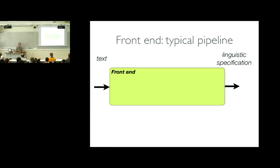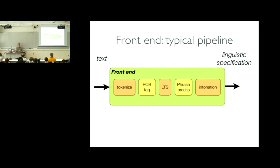Let's see in pictures the sorts of things that typically happen in the front end, and we'll dive into detail in a few of them. Inside the front end, the typical architecture is what we call a pipeline — a very naive architecture. It's just a concatenation, a sequence of processes, many of which require the output of the previous process. We need to predict part of speech before we can look up words in the lexicon. There are these hierarchies of linguistic information — some things depend on others.